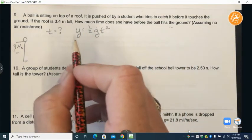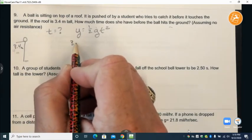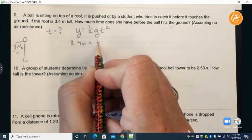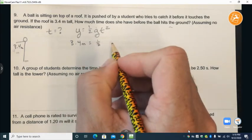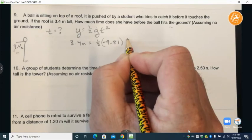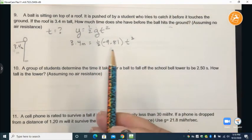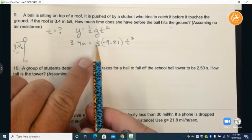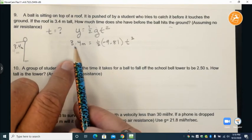So we'll go ahead and plug in our 3.4 meters high, one-half the acceleration of gravity negative 9.81 and t squared. So we should see a little bit of a problem with this negative here and there's nothing to cancel it out.